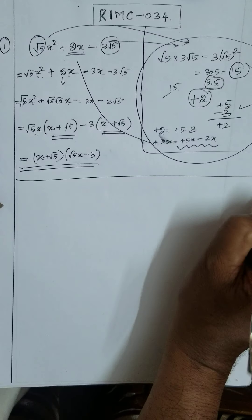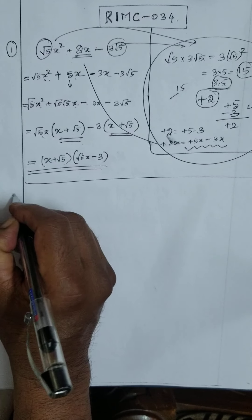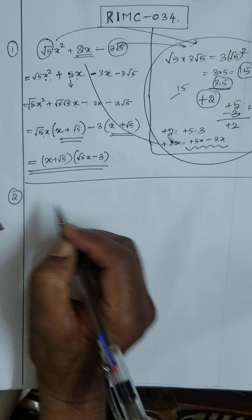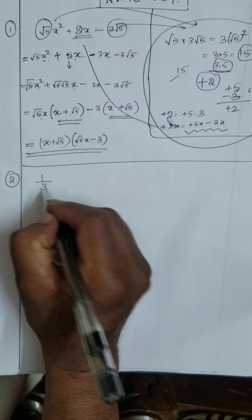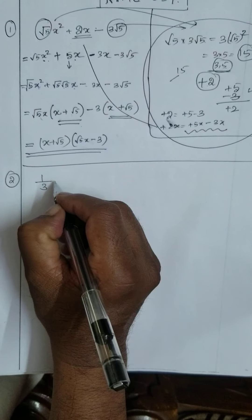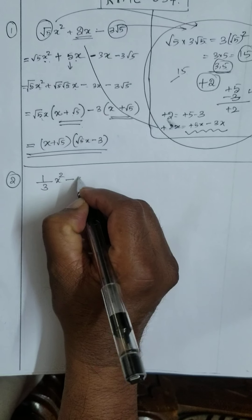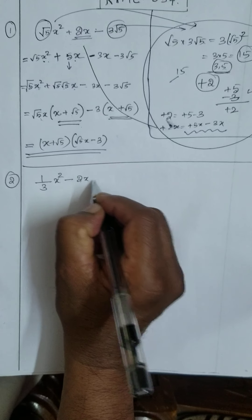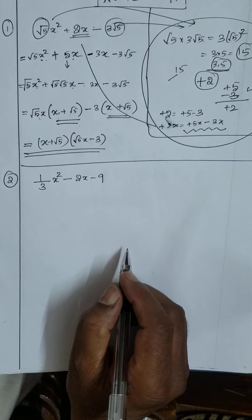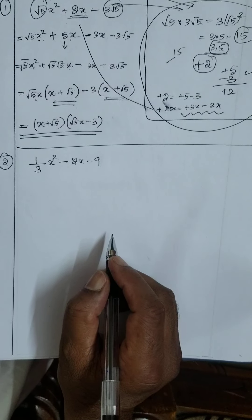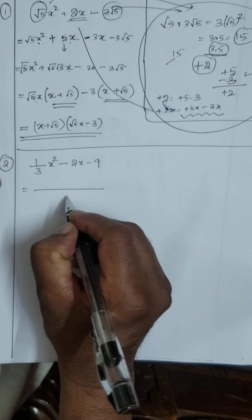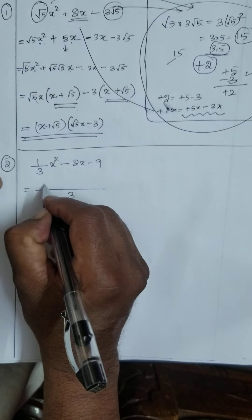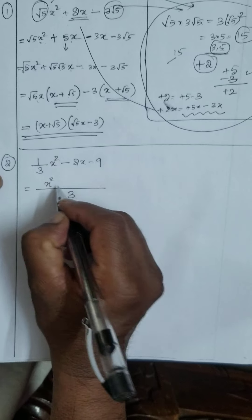Now we have factorized it. What is the next sum? The next sum to factorize is: 1/3·x² minus 2x minus 9. Now take the LCM.